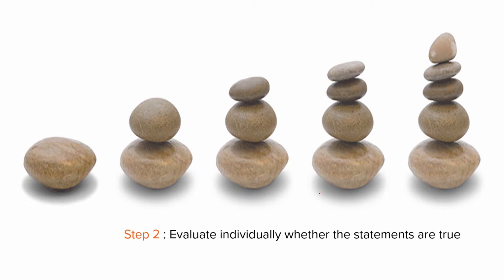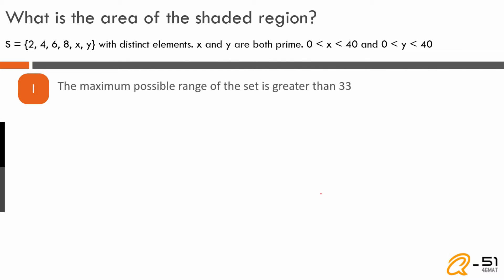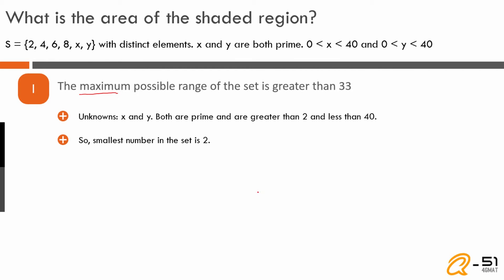Step 2: evaluate each statement. Statement 1 says the maximum possible range for this set is greater than 33. The range is the highest number minus the lowest. Since x and y are both greater than 2, the smallest number in the set is 2. To maximize the range, we need to find the highest possible value. Both x and y are prime and less than 40.